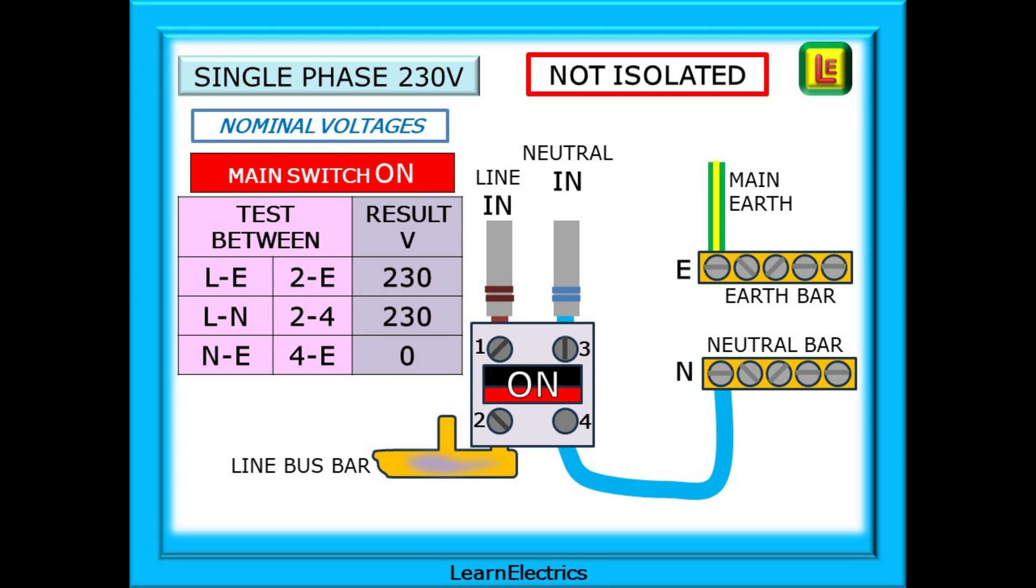What voltages should we expect in a consumer unit that has not been isolated? What would the normal working voltages be? We will use the nominal voltage of 230 volts AC in this video as per the regulations. In practice, the actual voltage that you measure will be anything from about 220 volts to 240 volts or so, but we still call this 230 volts nominal. Nominal just means the name that we call it.